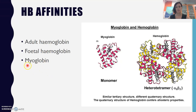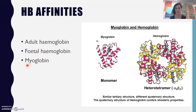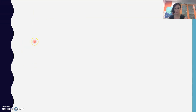Myoglobin is the kind of oxygen grabber associated with muscles, and muscles have an even higher need for oxygen than the fetus or the adult.